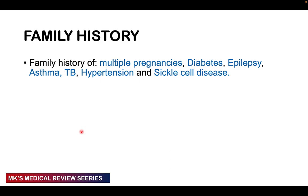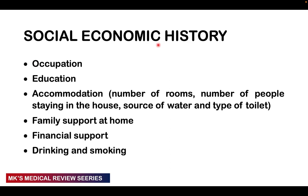The family history focuses on a history of multiple pregnancies, diabetes, epilepsy, asthma, TB, hypertension, and sickle cell disease, because some conditions tend to run in families.